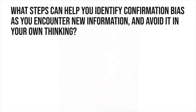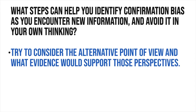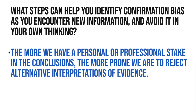Now that we've explored how confirmation bias can distort research, what steps can help you identify it as you encounter new information and avoid it in your own thinking? Even though it goes against all of the instincts that make us prone to confirmation bias, try to consider alternative points of view and what evidence would support those perspectives. Research shows that the more the conclusion feels like it matters to you — like it shapes who you are — the more prone we are to reject any alternative interpretations of evidence.